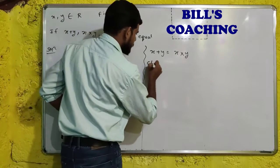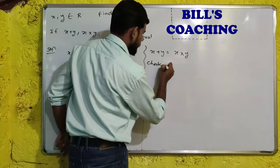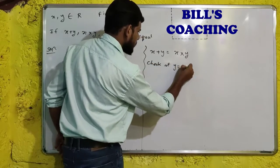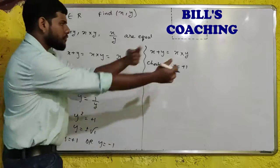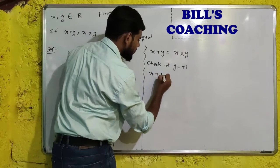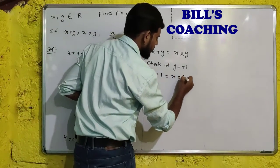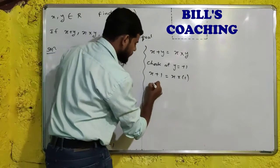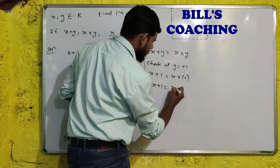So we will check at y is equal to plus 1. So if y is plus 1, then x will become plus 1 multiplied by 1. So here we can say plus 1 and x.